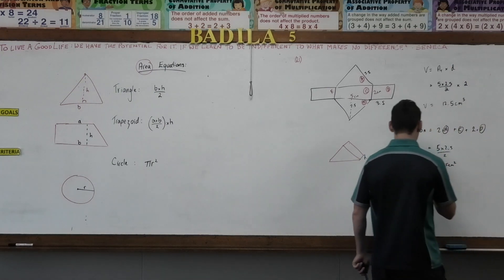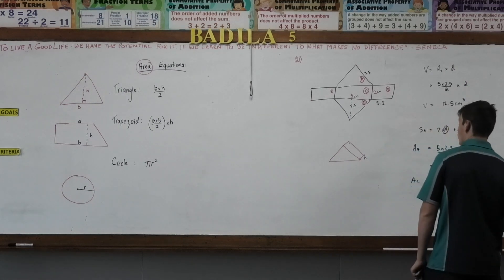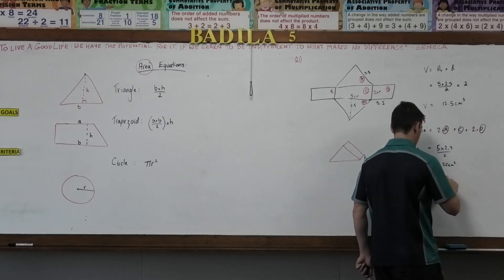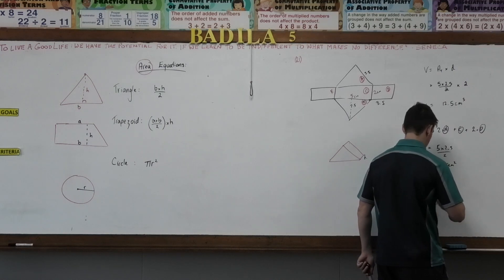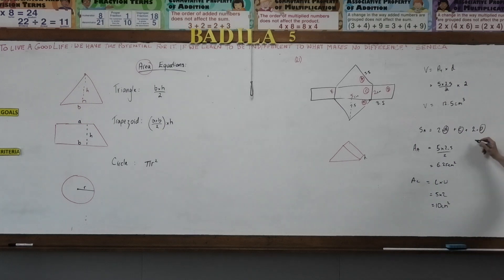What about area C, what's that equal? Length times width, which is 10 centimeters squared. And then my last one, area D equals length times width, which is 2 times 3.5, which equals 7 centimeters squared.